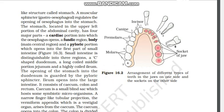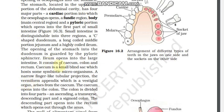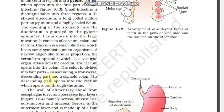The duodenum opening into the small intestine is guarded by the pyloric sphincter. The ileum opens into the large intestine, which consists of the cecum, colon, and rectum. The cecum is a blind sac and is a host of many symbiotic microorganisms. There is also a finger-like tubular projection called the vermiform appendix, which is a vestigial organ. The colon is divided into ascending, transverse, and descending parts, and the descending colon opens into the anus.